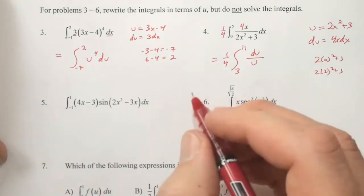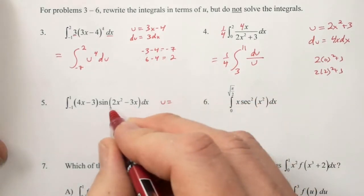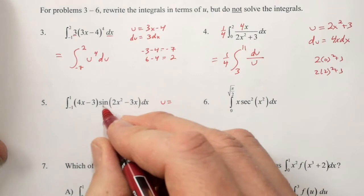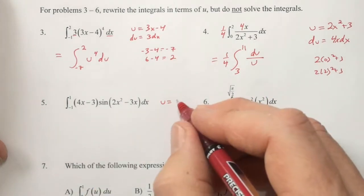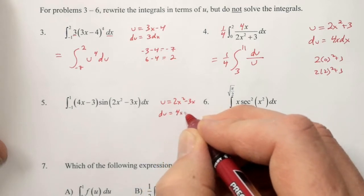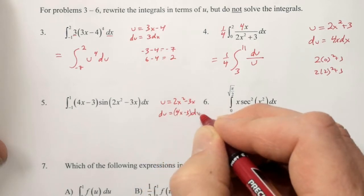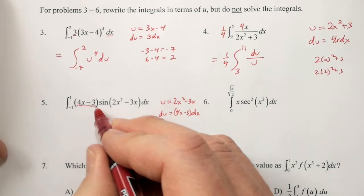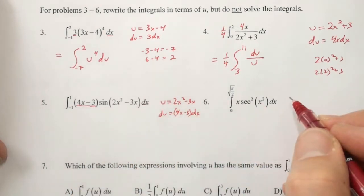For number 5, u is the inner function of the sine expression. U is 2x squared minus 3x. The derivative of that is 4x minus 3 dx, which, coincidentally, we have.